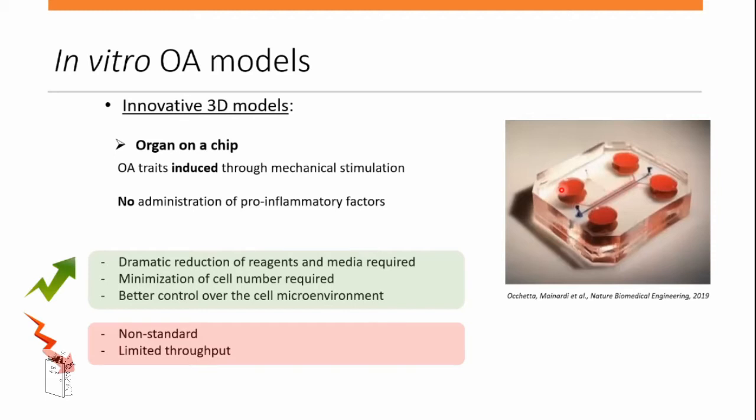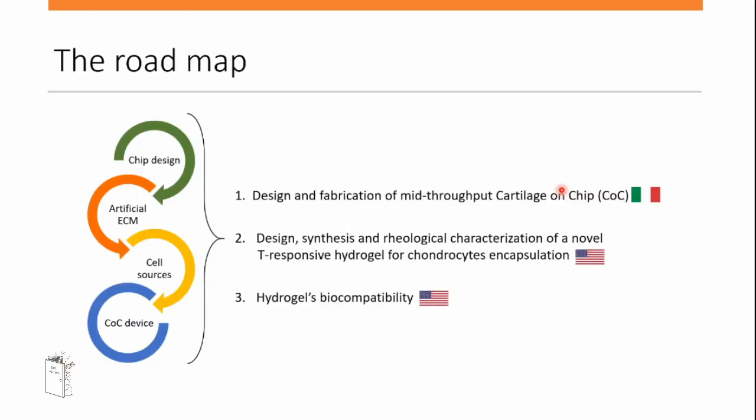The aim of my project, building upon a model developed by my group at Politecnico di Milano in Italy, is to increase throughput. The journey I'm on involves: first, designing and fabricating a mid-throughput cartilage-on-chip by increasing the number of chambers within the device; and second, developing and synthesizing a thermoresponsive hydrogel for chondrocyte encapsulation — studying its biocompatibility within the device.